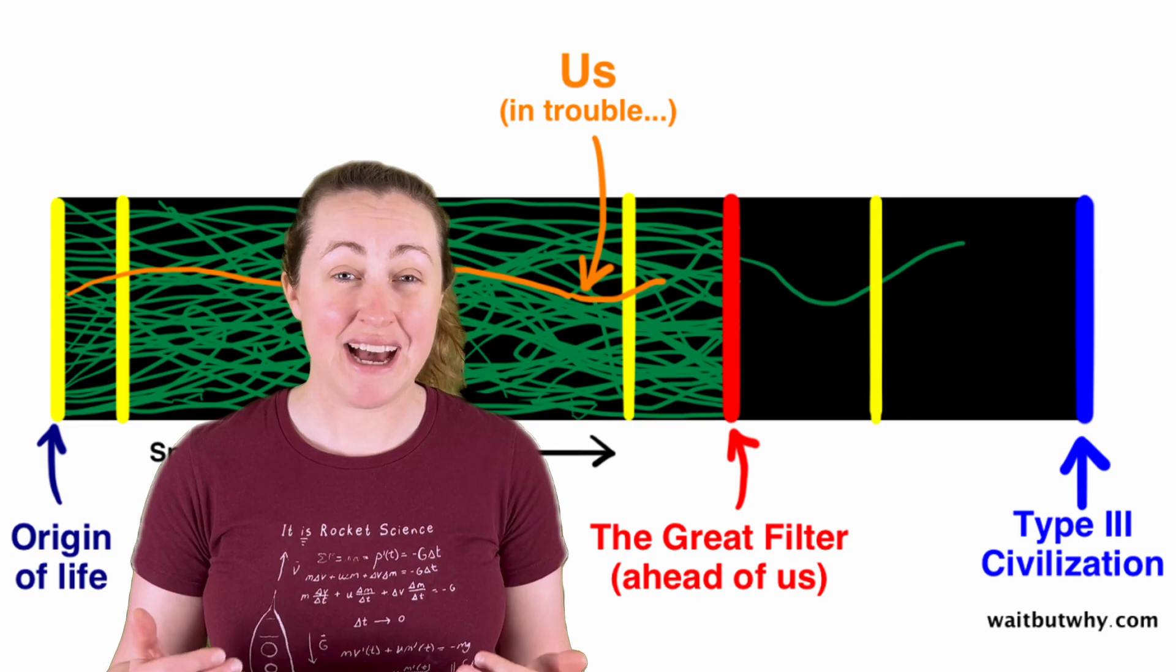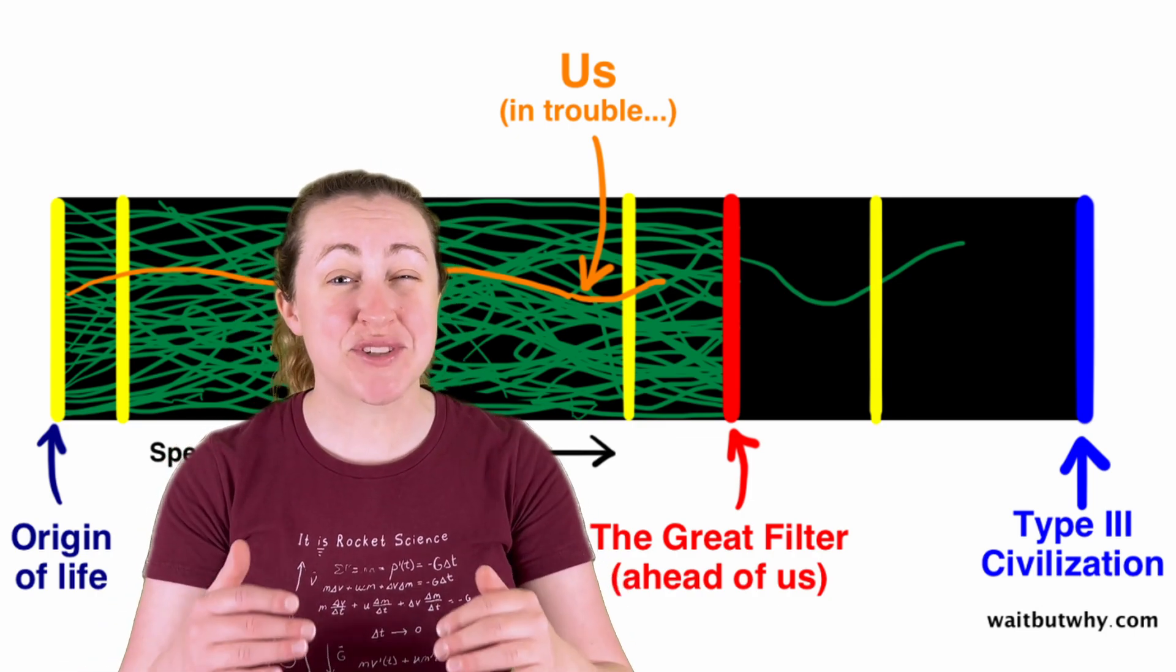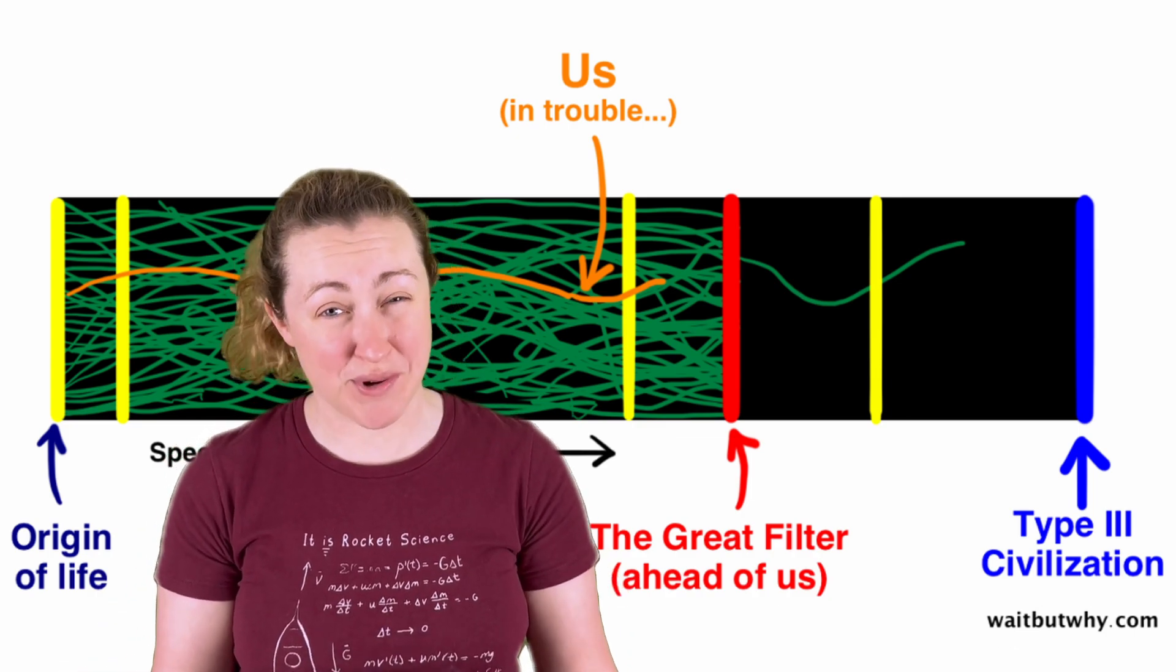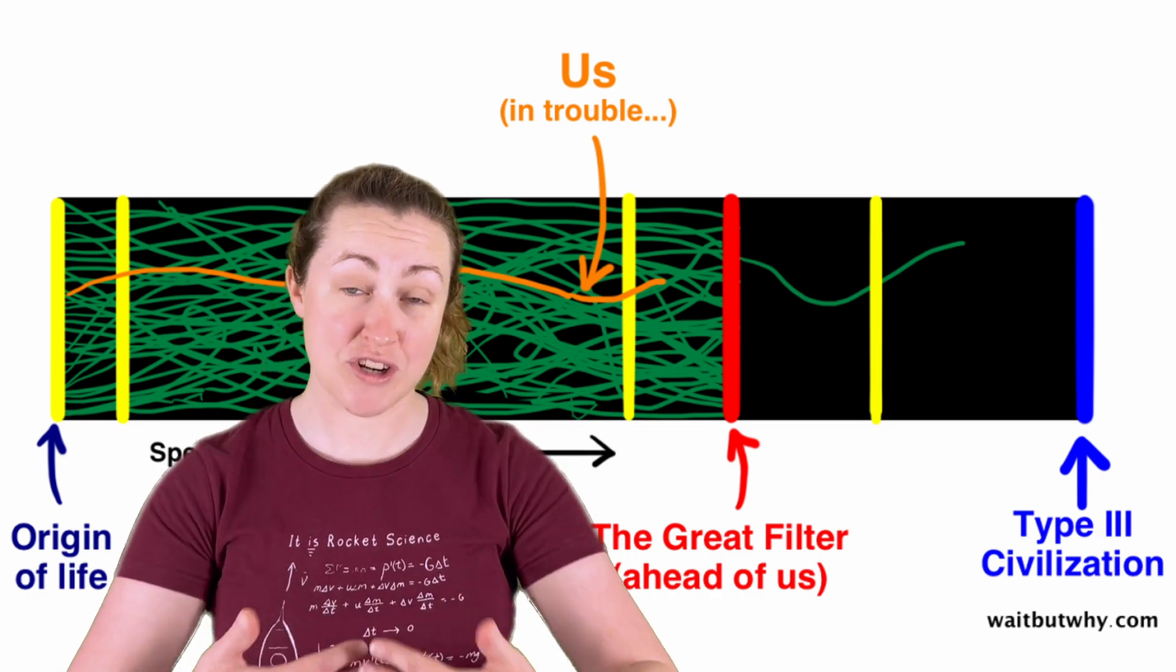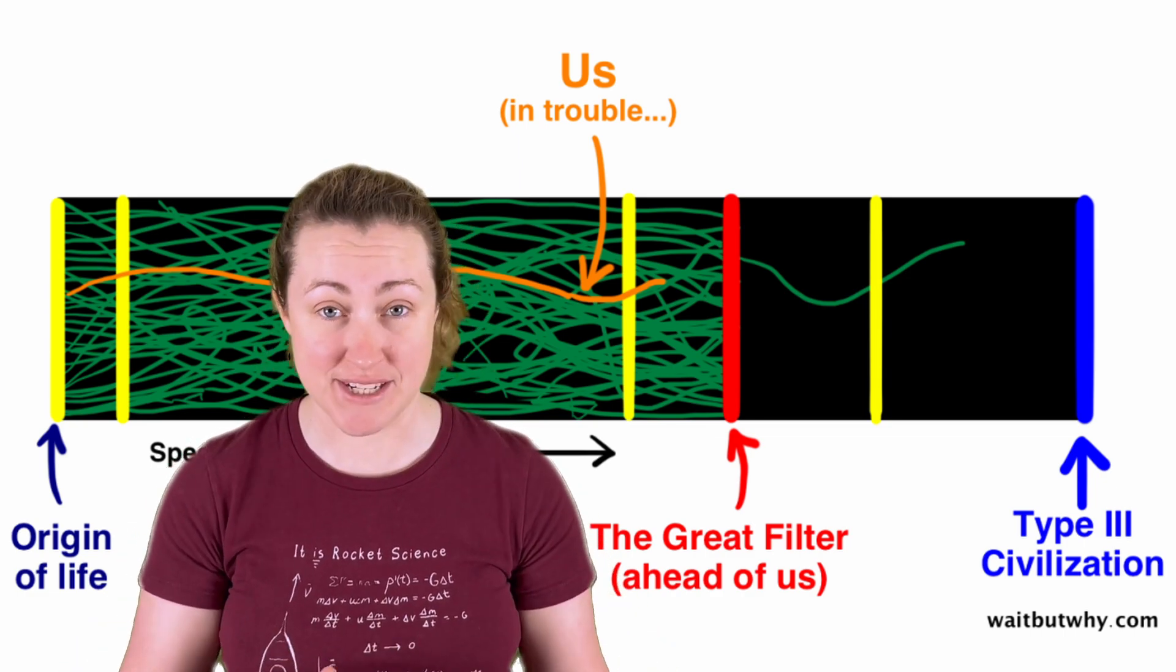The other scenario is that we have not passed the filter. It's ahead of us. That is the most concerning because it means that life is pretty common, but no one survives it. It means that we're rushing toward the filter and have no idea what we're about to face. Every generation has their moment of thinking that the world is going to end, but the difference now is that we could actually do it. Some scientists believe that we are in what's called a window of peril, a period of time where we have the capacity to destroy ourselves in a way that wasn't really possible before. One person presses a button, and they could single-handedly be responsible for killing what may be the only life in the universe. These are the thoughts that keep me up at night.